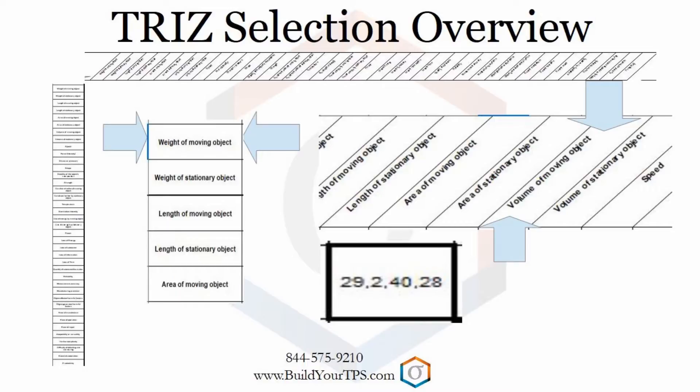Some examples of other parameters include shape, temperature, ease of repair, productivity, and loss of information. It seems that if you analyze 40,000 inventions, there will be a whole lot of different parameters. In the matrix, look at the intersection of the two selected parameters to find the list of inventive principles. In this example, the list is 29, 2, 40, 28.